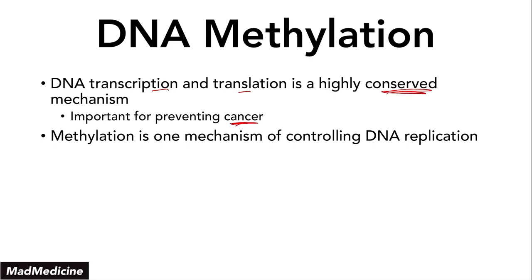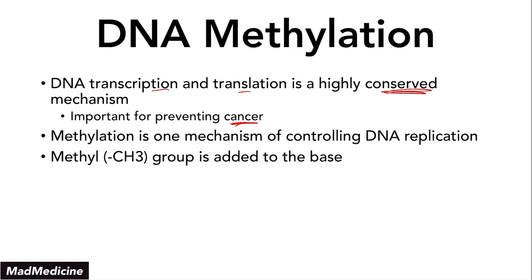What happens in this process is that in the DNA, you're going to get a methyl group — a CH3 molecule — bind to the base itself. Remember we talked about the bases: adenine, cytosine, etc. Those molecules will get a methyl group. This is very important for portions of your DNA called CpG islands — DNA methylation is highly associated with CpG islands, and this is where it usually occurs.